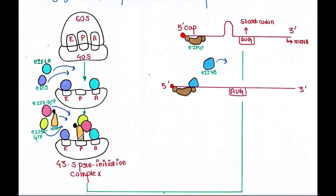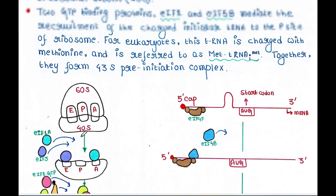Because this initiator tRNA will start the translation process, and it is charged since it has the amino acid. And this eIF2 and eIF5B help this initiator tRNA fit the P site.